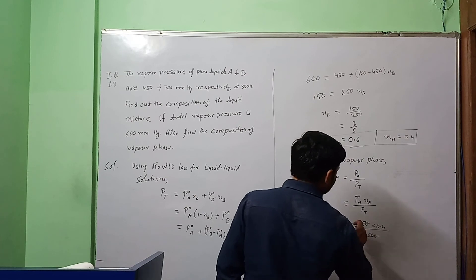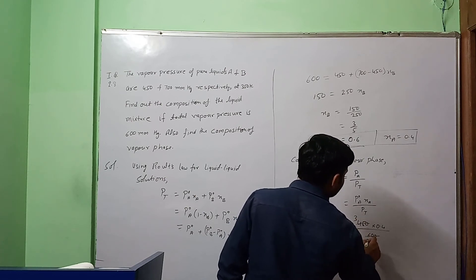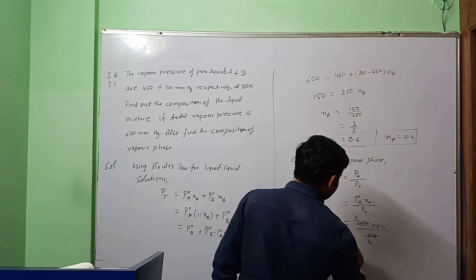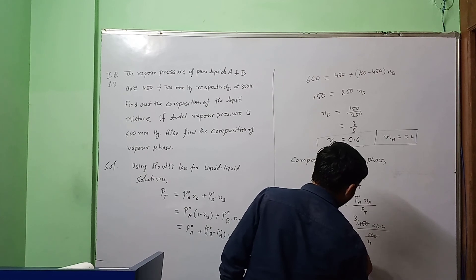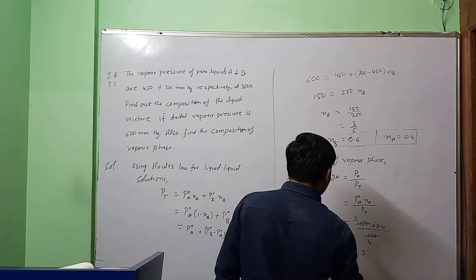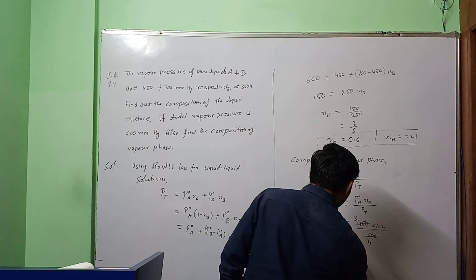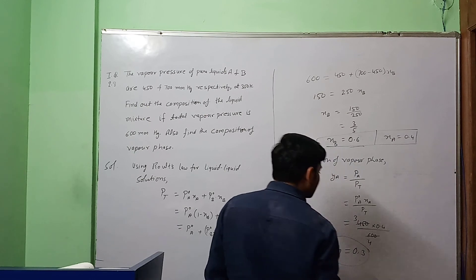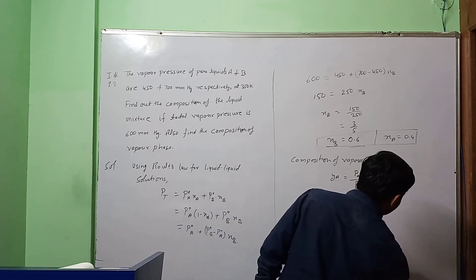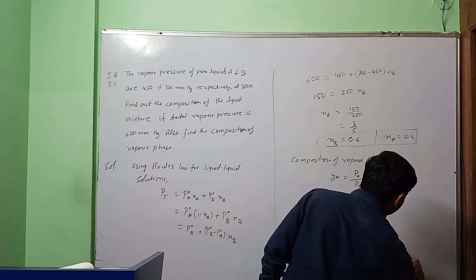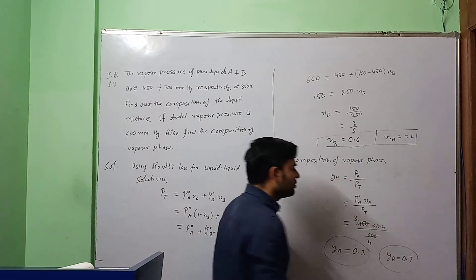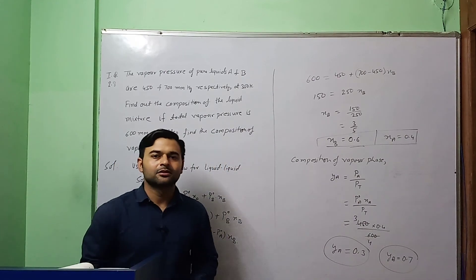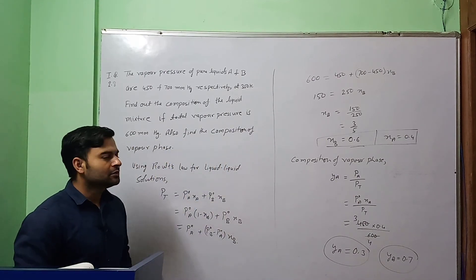If we cancel out this, we will get 3 and here 4. So it will come as 0.3. Value of YA is 0.3 and YB will get 0.7. This is the composition of vapor phase and this is the solution to the question.